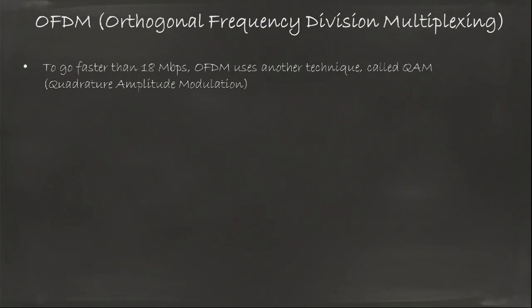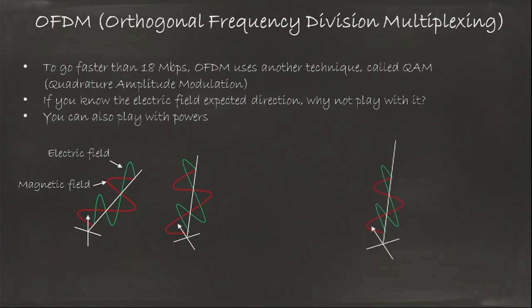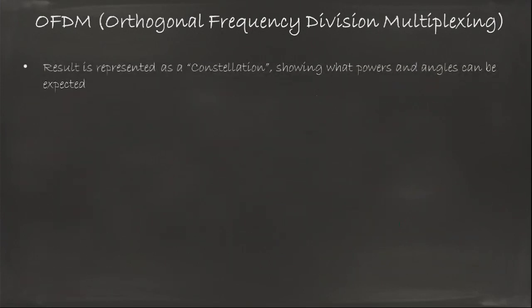In OFDM, we use another technique called QAM, that stands for Quadrature Amplitude Modulation. What that means is, you remember my channel that was polarized with my vertical polarization? We know that there is an electric field and the magnetic field, and we know their expected direction for each of the subtones. Why don't we play with those directions a little bit? And why don't we also play a little bit with power? You send slightly different electric field direction and power. You send slightly on the left side your electric field and therefore your magnetic field. You can also send a slightly weaker signal or stronger signal.